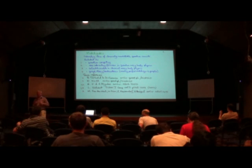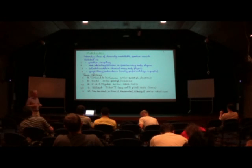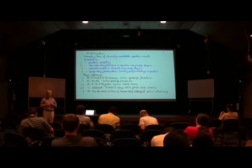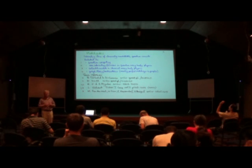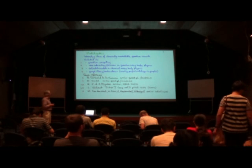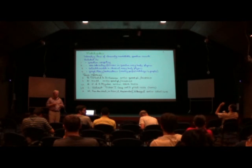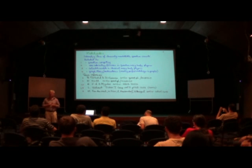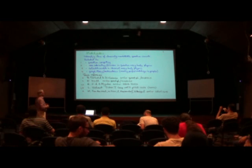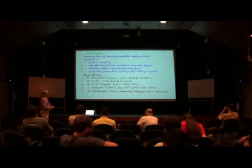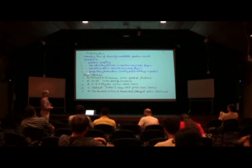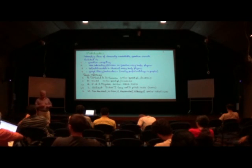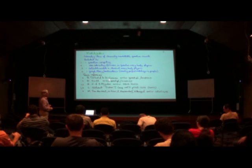In my third talk I want to talk about matchgates. Matchgates are another interesting class of quantum circuits like Clifford circuits that have very interesting classical simulation properties, and perhaps even more interesting than Clifford circuits in many ways because they're related to a wide variety of interesting things, some of which I've listed here. Matchgates initially appeared from the work of Leslie Valiant, who's a classical complexity theorist, around about 2000.